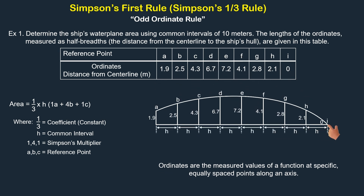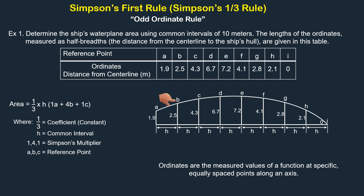In this illustration, this is the ship's centerline. The vertical lines perpendicular to the centerline are called ordinates. These ordinates are measured from the centerline to the ship's hull and are labeled using alphabets, with values given in meters. You can also label your ordinates using numbers. The interval between ordinates is uniform — in this case, 10 meters, which means the ship's total length is 80 meters.